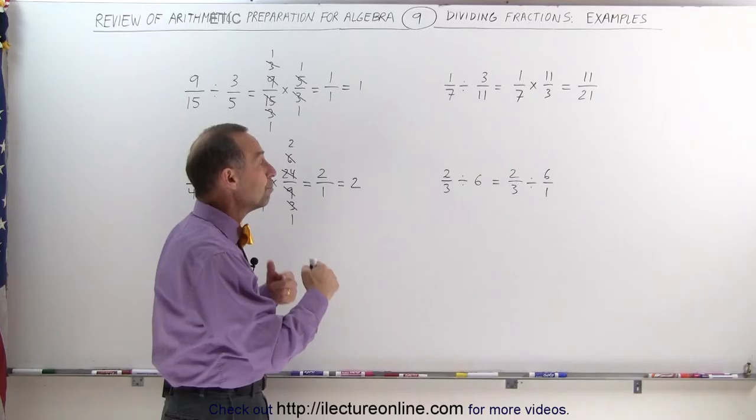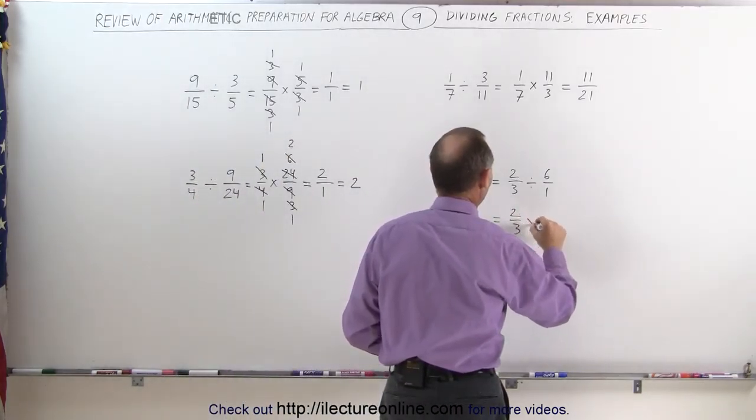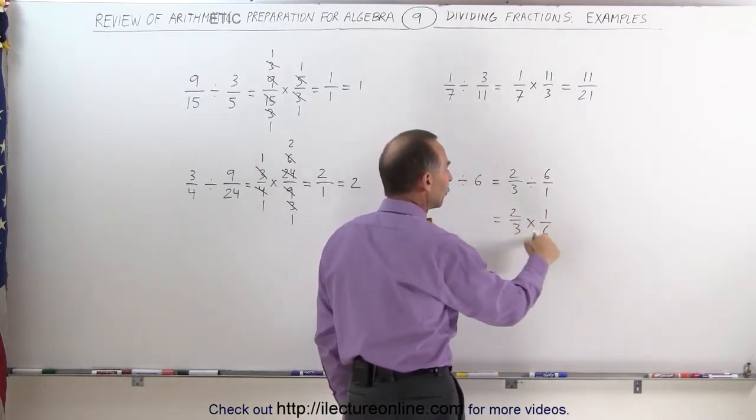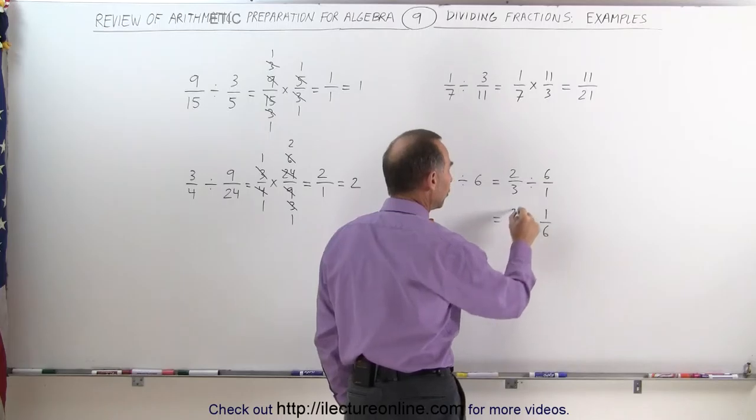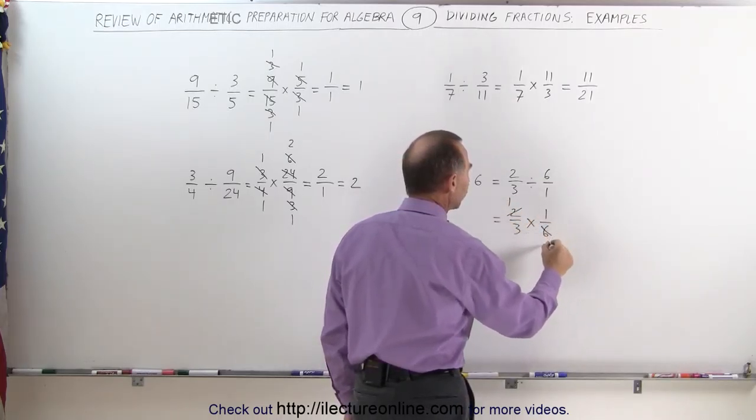Now you're going to multiply by its inverse: 2/3 times 1/6. You see that the 2 and the 6 have something in common. 2 can be divided by 2 to become 1, 6 can be divided by 2 to become 3.